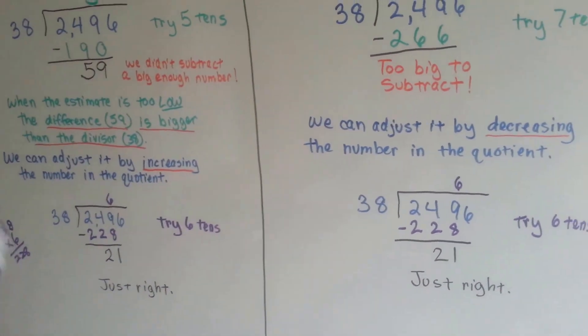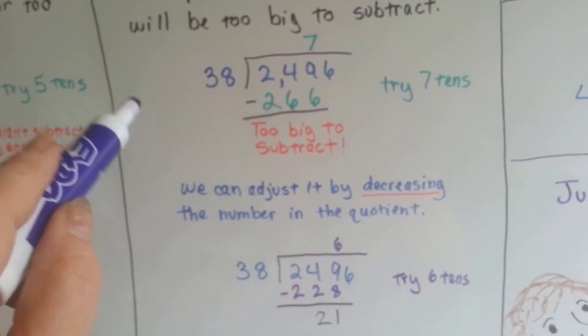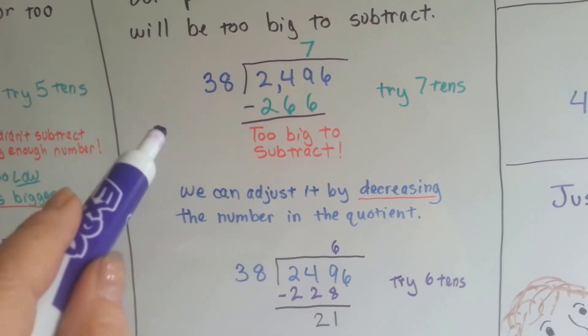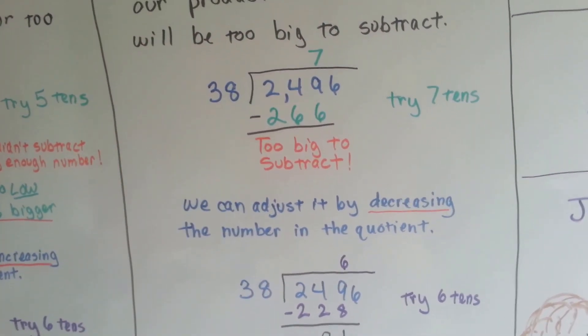But again, if you do the multiplication on the side when you guess, so try guessing 7. Do the multiplication on the side and see if it'll fit. If it's too big, try 6 off on the side, and then that way you won't mess up your paper.